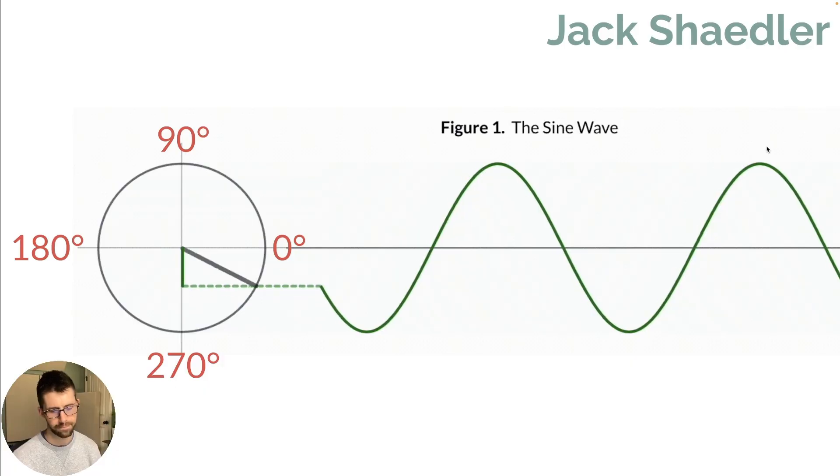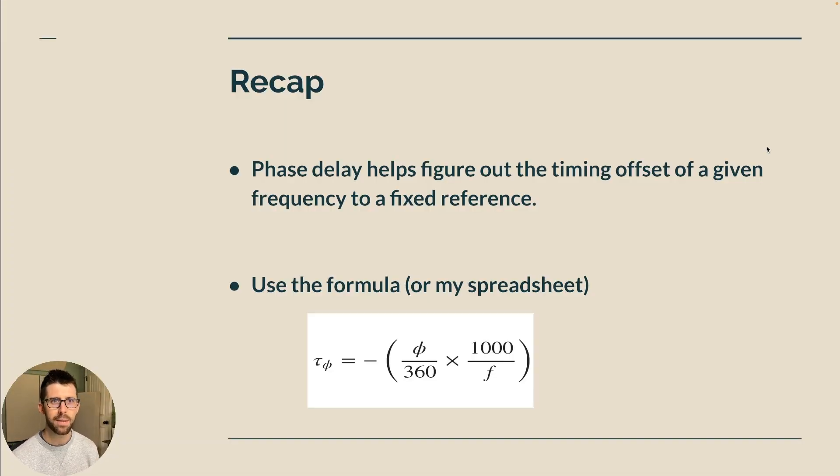So that's it. Here's our recap. Phase delay helps figure out the timing offset of a given frequency to a fixed reference. And what do you have to know? You got to know the frequency you care about and its amount of phase shift at that frequency. You can plug into this formula or use my spreadsheet and get great results.